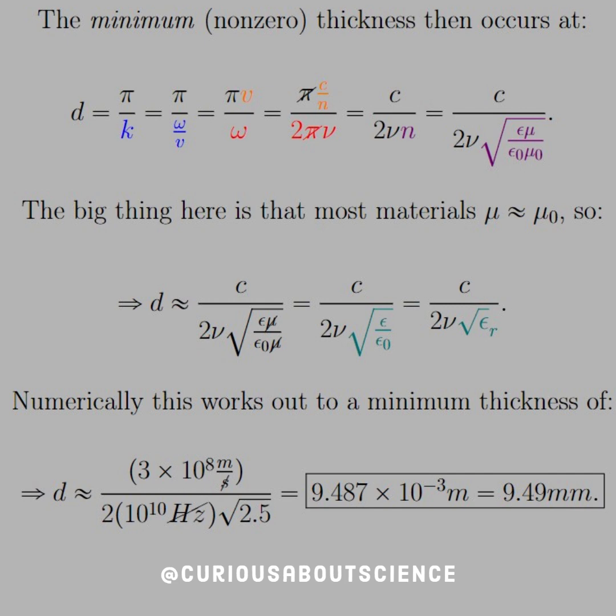V is equal to c over n. Omega is equal to 2 pi nu. Pi is canceled. Wonderful. So we get c over 2 nu n.